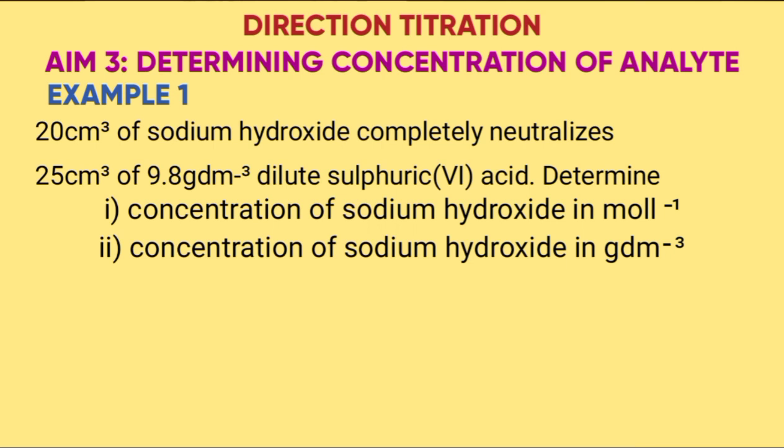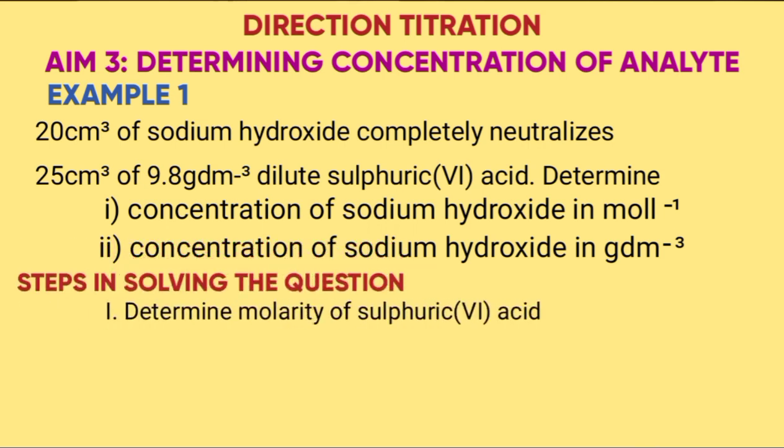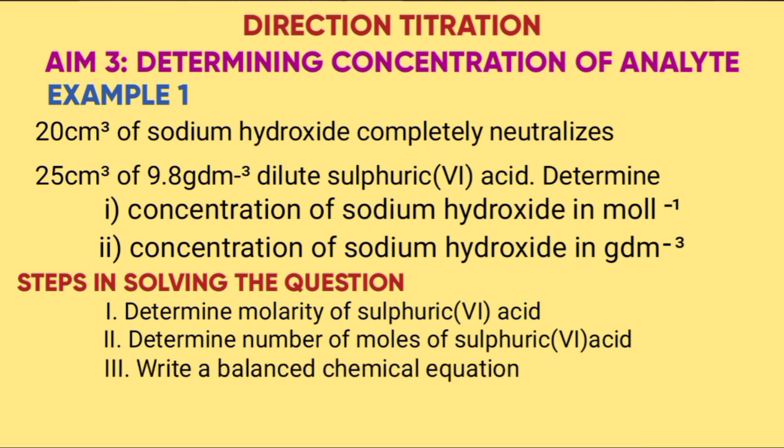To solve this question, the students will be required to follow the following steps. Step 1: Find molarity of dilute sulfuric(VI) acid, which is the standard solution, by mass per liter over molar mass. Step 2: Determine the number of moles of sulfuric(VI) acid by taking molarity times the volume over 1000. Step 3: Write a balanced chemical equation for the reaction between sodium hydroxide and sulfuric(VI) acid.